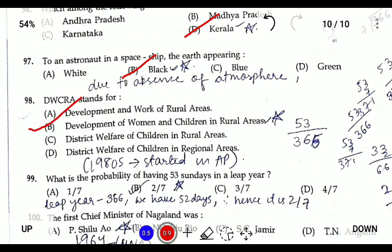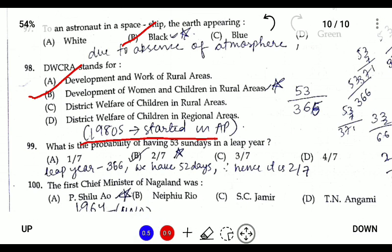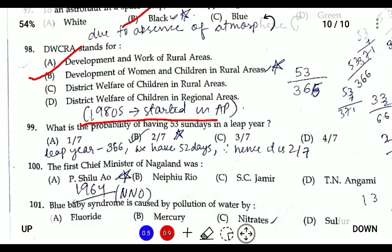Question ninety-eight: DWCRA stands for Development of Women and Children in Rural Areas. It was started in the 1980s and first launched in Andhra Pradesh. Question ninety-nine: what is the probability of having 53 Sundays in a leap year? The answer is 2/7.